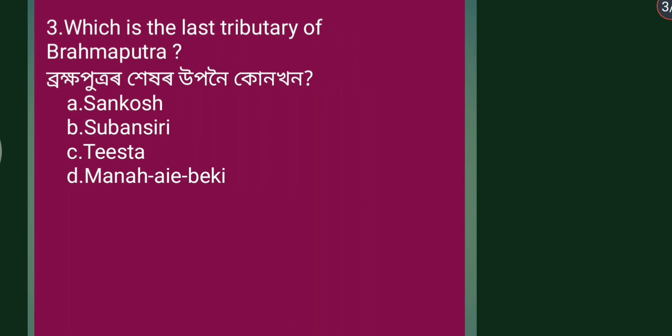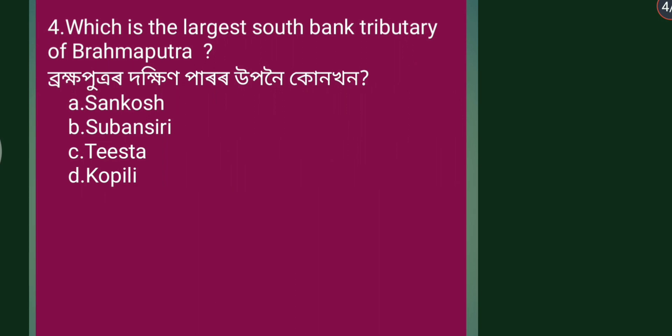Which is the last tributary of Brahmaputra? The answer is Tista river. Tista river is the last tributary. Brahmaputra flows through India, Bangladesh, and China.